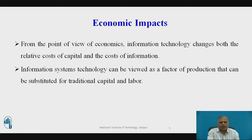Traditionally, firms have tried to reduce transaction costs through vertical integration by hiring more employees and buying their own suppliers and distributors, as both General Motors and Ford used to do. Information technology, especially the use of networks, can help firms lower the cost of market participation — that is, transaction costs — making it worthwhile for firms to contract with external suppliers instead of using internal sources. For example, when Eastman Chemical Company split off from Kodak in 1994, it had $3.3 billion in revenue and 24,000 full-time employees. In 2013, it generated over $9.3 billion in revenue with only 14,000 employees.